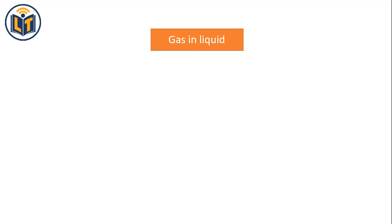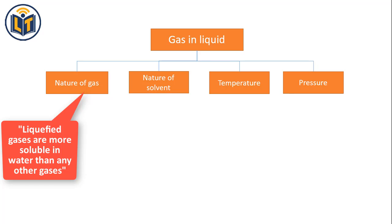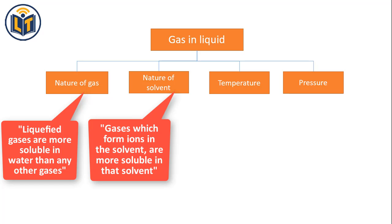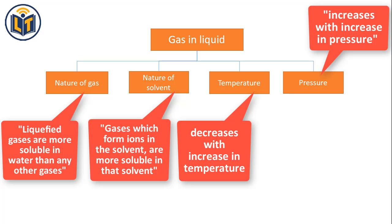Next is solubility of gas in liquid. The solubility of gas in liquid is affected by factors such as nature of the gas, nature of solvent, temperature and pressure. First is nature of the gas — liquefied gases are more soluble in water than any other gases. Second is nature of solvent — gases which form ions in the solvent are more soluble in that solvent. Third is temperature — the solubility of gases decreases with increase in temperature. Fourth is pressure — solubility of gases increases with increase in pressure, which is supported by Henry's law. Henry's law states that the solubility of a gas in a liquid is directly proportional to the partial pressure of the gas.